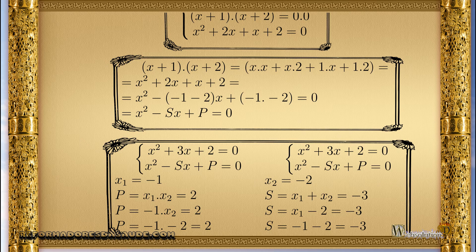Minus 1 times minus 2 equals 2, since the multiplication of two negative values generates a positive value. We use the letter P for product, which represents the product of the roots.